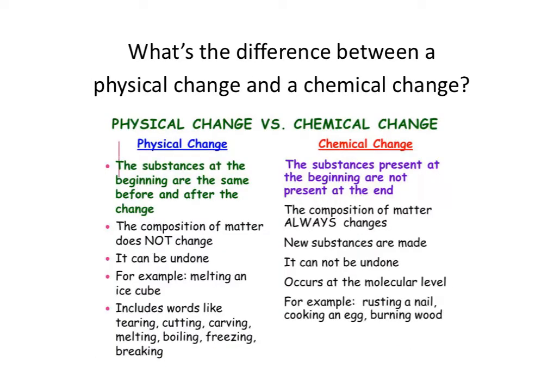First of all, let's review the difference between a physical change and a chemical change. Dissolving and phase changes, those are physical changes. The substance that you have in the beginning and the end of the process is of the same composition.